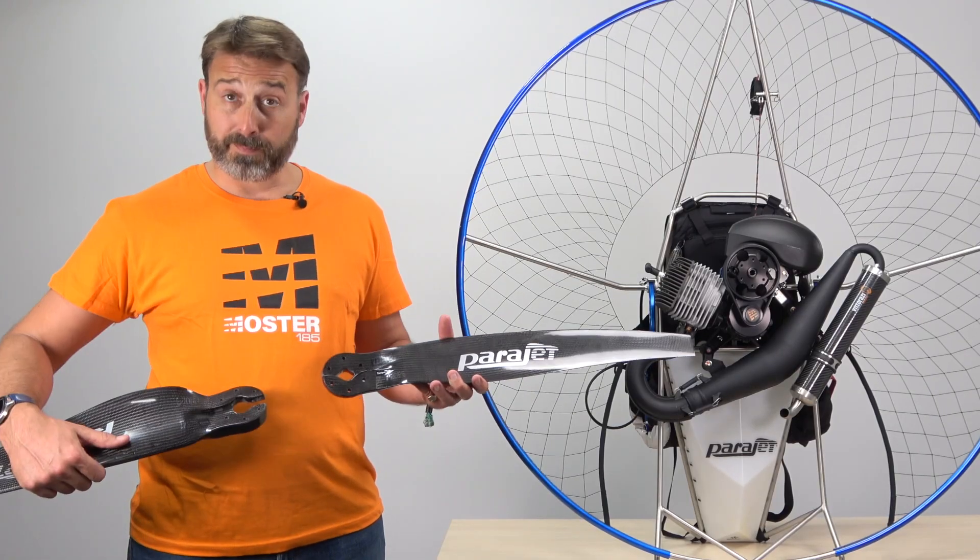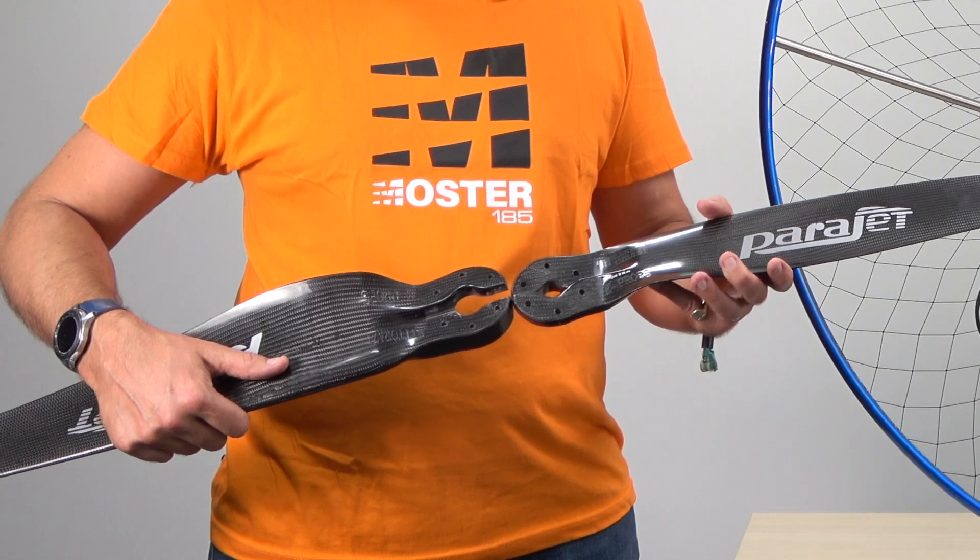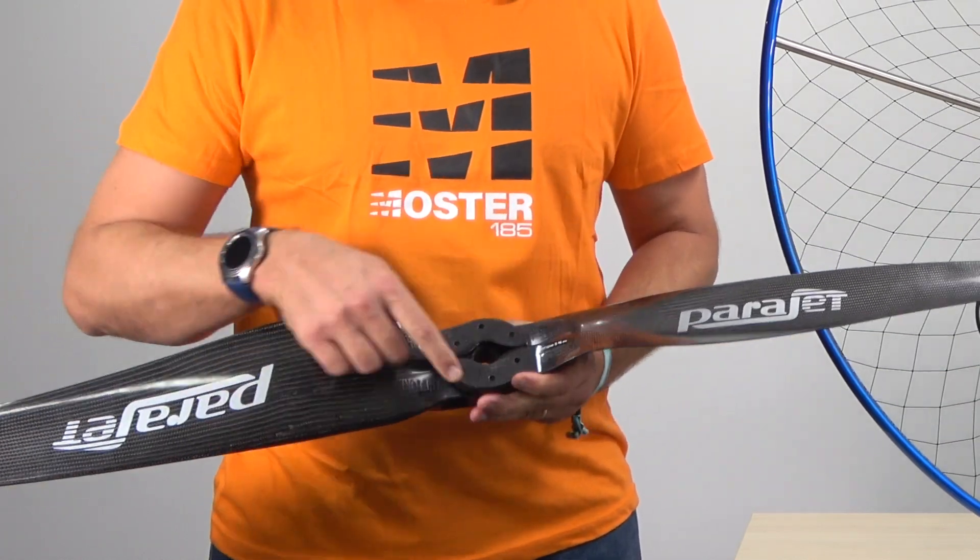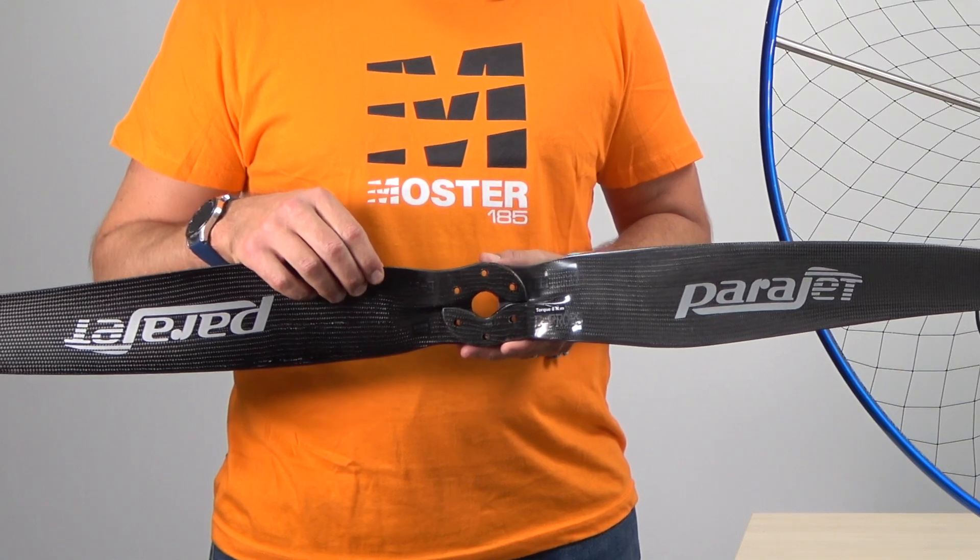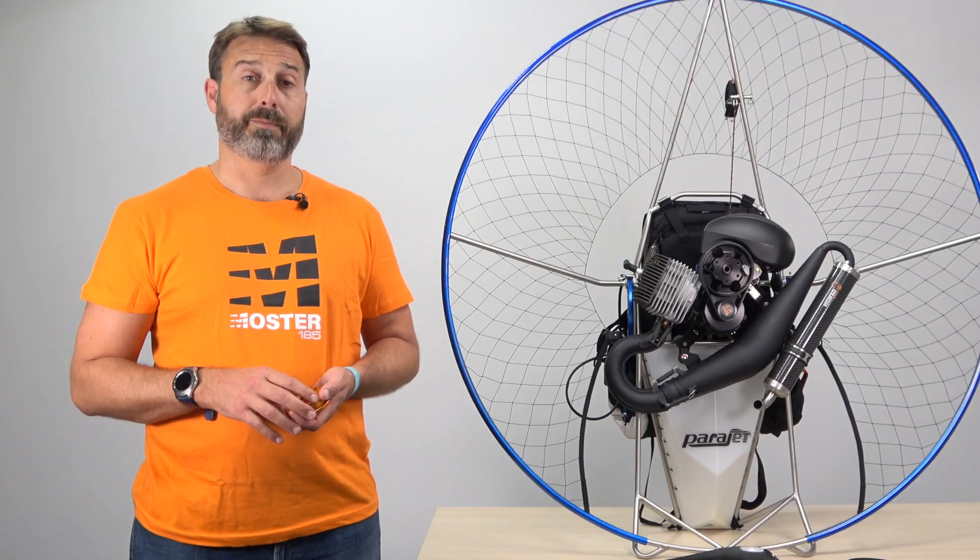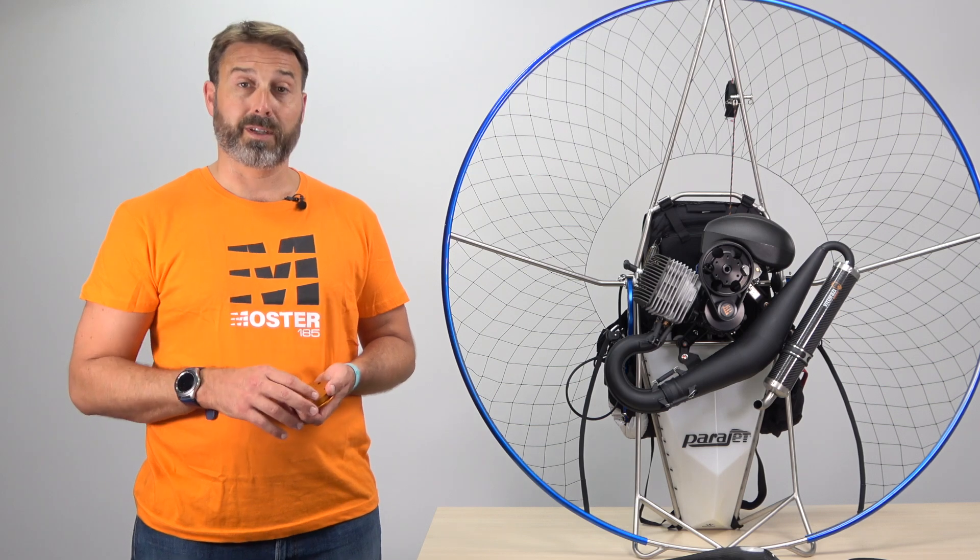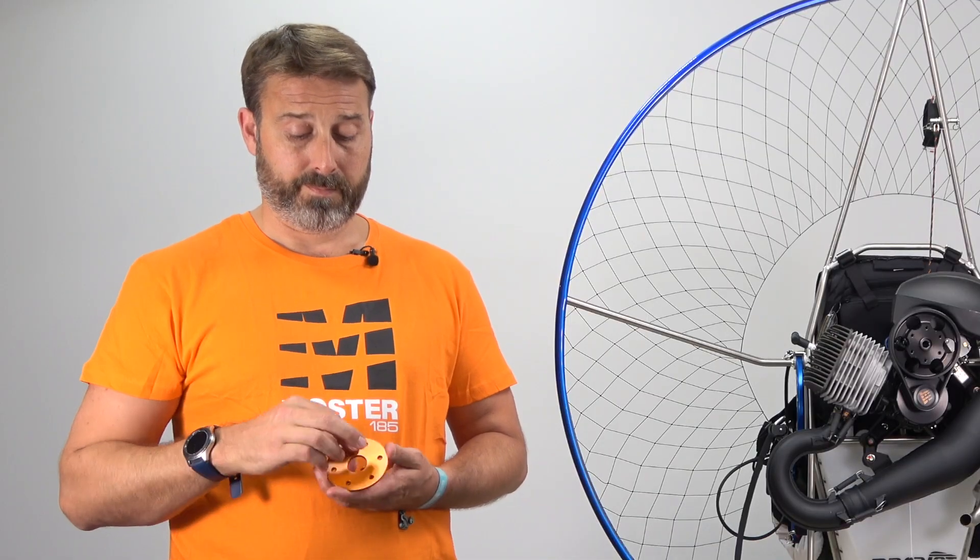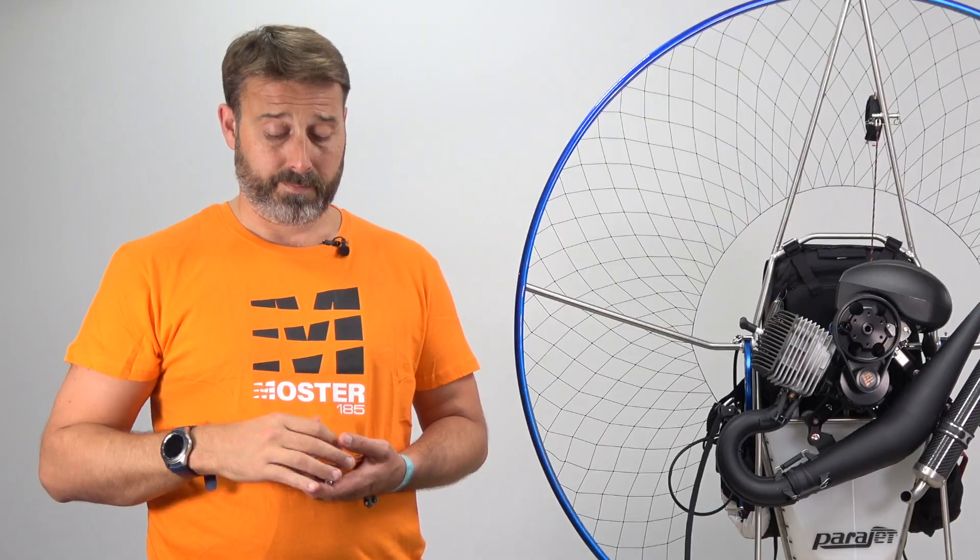Once you've ensured that both blades match correctly, take them and intersect them like this, ensuring that each of the six holes line up directly. Now that we've assembled the propeller, let's look at the other important pieces: first a propeller spacer, second an outer prop plate, and lastly six bolts with the necessary washers.